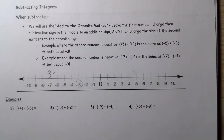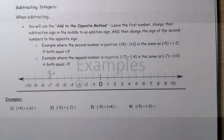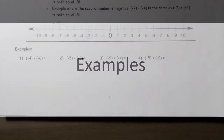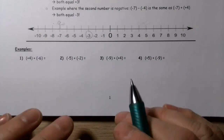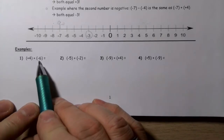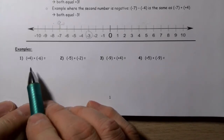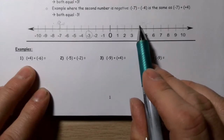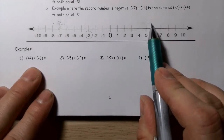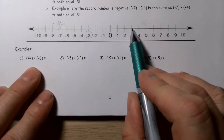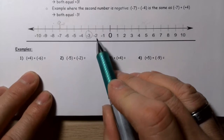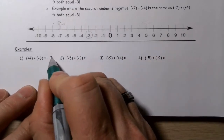Let's work through some examples. Four plus negative six: I'm starting on four, I'm going to add — meaning I'm facing to the right — I'm adding negative six, so I take six steps backwards: one, two, three, four, five, six. That puts me at negative two. So the answer is negative two.